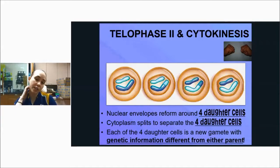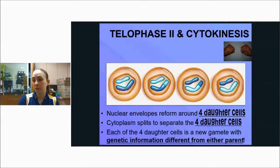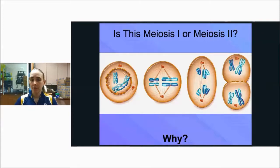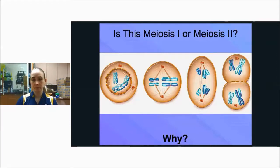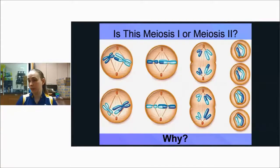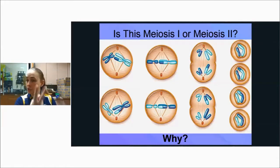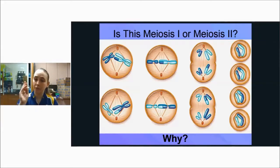Each of the four daughter cells is a new gamete with genetic information different from either parent. Now let's discuss differences between sperm and egg formation. If you see a picture starting with one cell, homologous pairs lining up, and ending with two — that's meiosis one. If you start with two cells, no homologous pairs because they've already been split, you're splitting sister chromatids and ending with four cells — that's meiosis two.